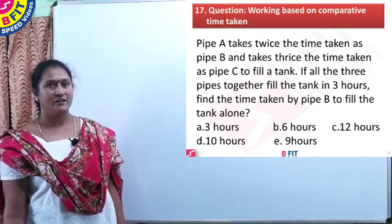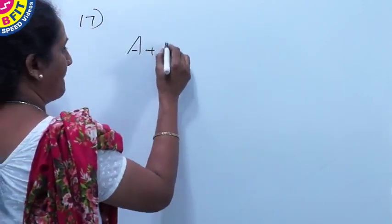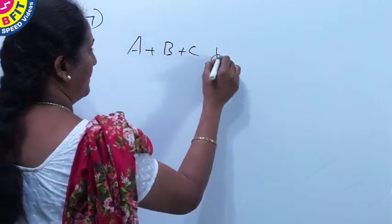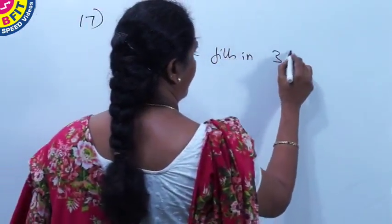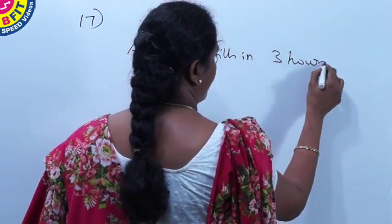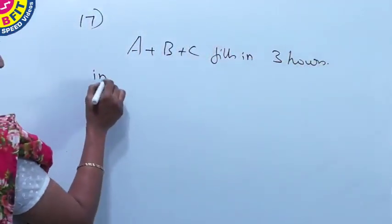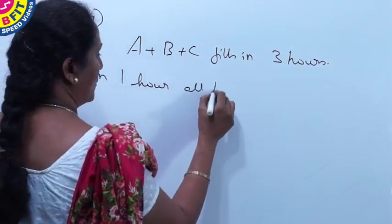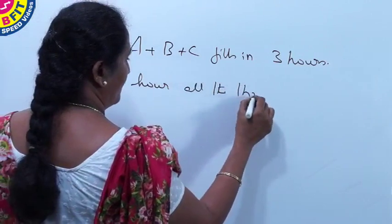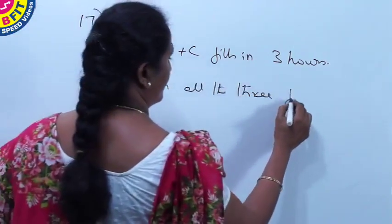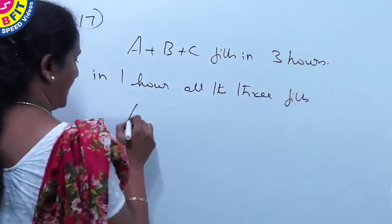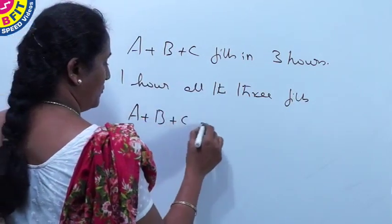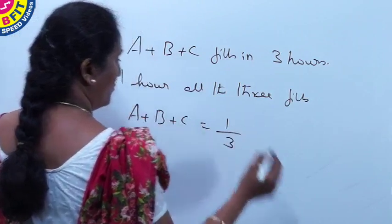So we will see the working. So 3 pipes fill the tank in 3 hours. So in 1 hour, all the 3 fill, that is A, B and C together fill 1 third of the tank.